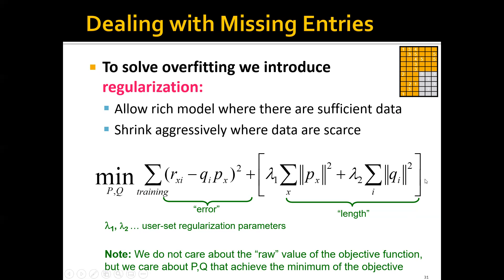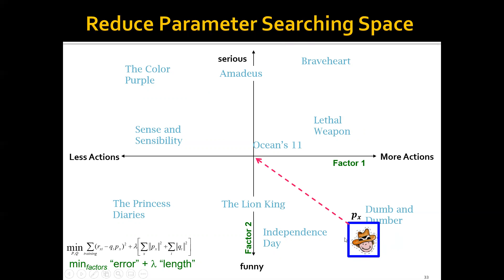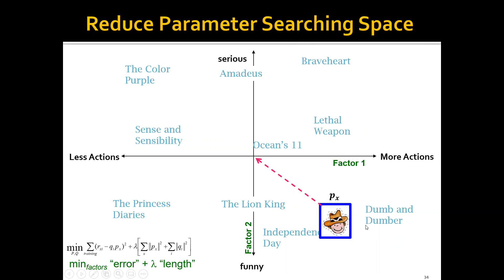Note that we don't care about the actual raw value of this objective function — we only care about the matrices P and Q that can achieve the minimum of the objective. Graphically, if a user has rated 100 movies, we will place the user factors px around the movies he or she has rated. But if the user has only rated 10 movies, we will shrink px even more.